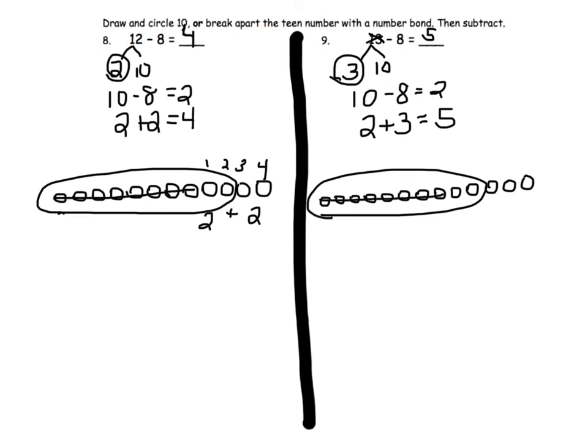which leaves us the 2 plus the 3, 1, 2, 3, 4, 5. So 13 minus 8 equals 5.